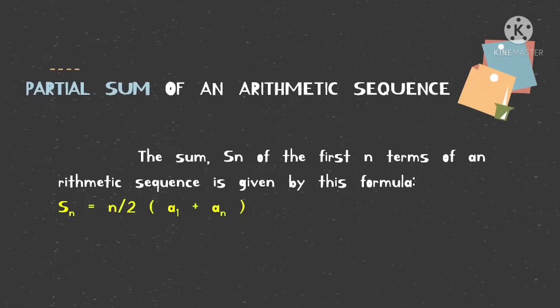So, partial sum of an arithmetic sequence. The sum s sub n of the first n terms of an arithmetic sequence is given by this formula: s sub n equals n divided by 2 times a sub 1 plus a sub n. Please note this formula because we're going to use it in solving.